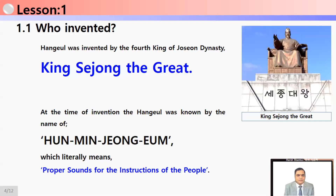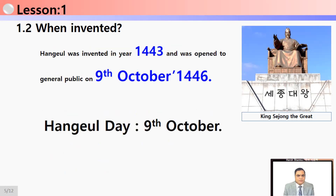The first point: who invented Hangul? Hangul was invented by the fourth king of the Joseon dynasty. The king's name, as you can see on your screen, is King Sejong the Great. At the time of its invention, Hangul was known by the name Hun Min Jongam, which literally means 'proper sounds for the instruction of the people.'